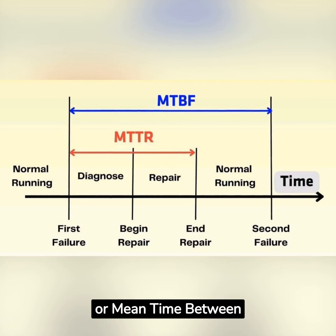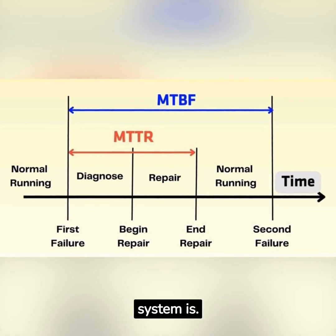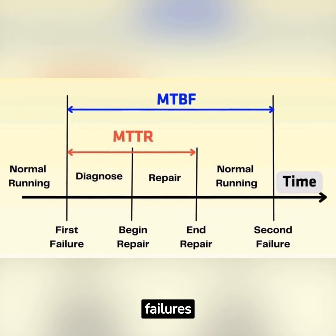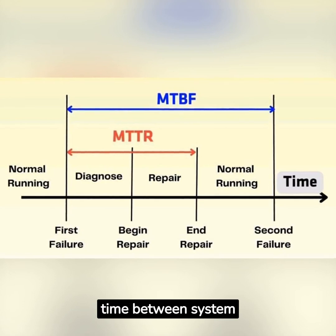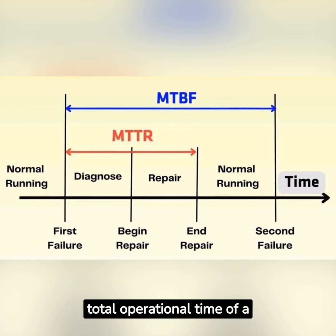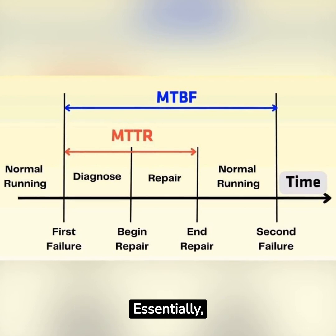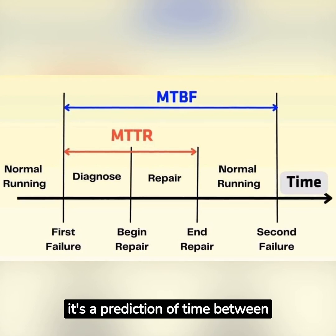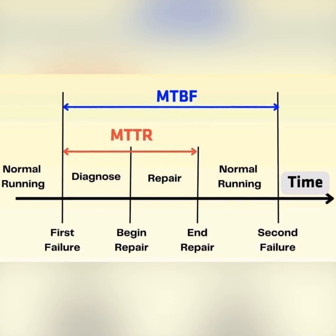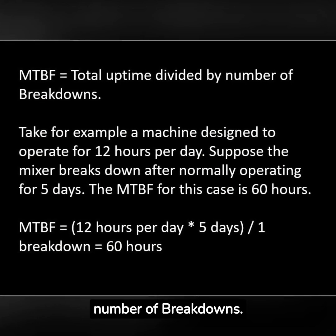MTBF, or mean time between failures, is a common measure of how reliable a product or system is. It is the average time between system breakdowns, calculated by adding up the total operational time of a system and dividing it by the number of failures. Essentially, it's a prediction of time between the inherent failures of a system during operation.